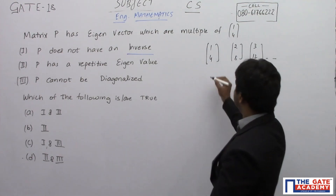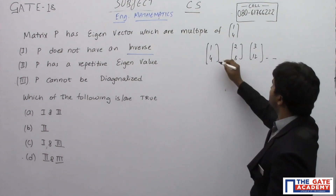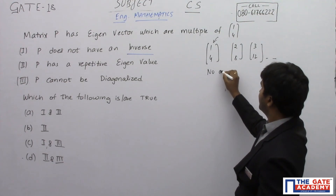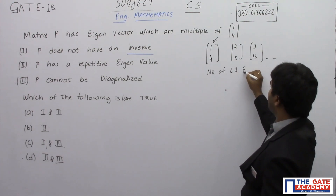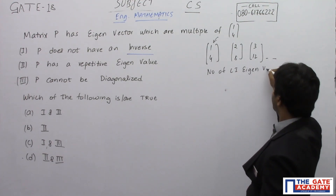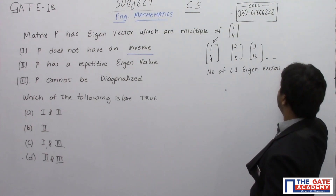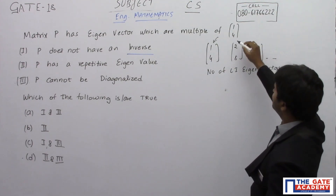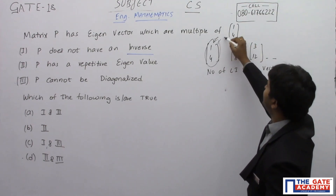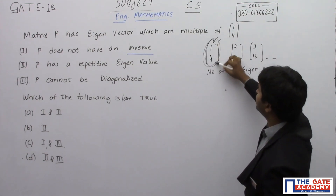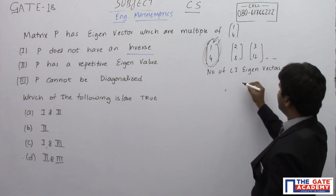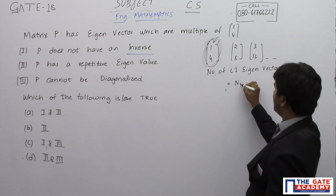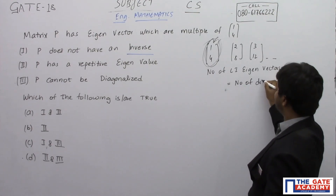Whenever you are having eigenvectors that are multiples of [1, 4], the number of linearly independent eigenvectors is equal to 1. There is only one linearly independent eigenvector, and the number of linearly independent eigenvectors equals the number of distinct eigenvalues.